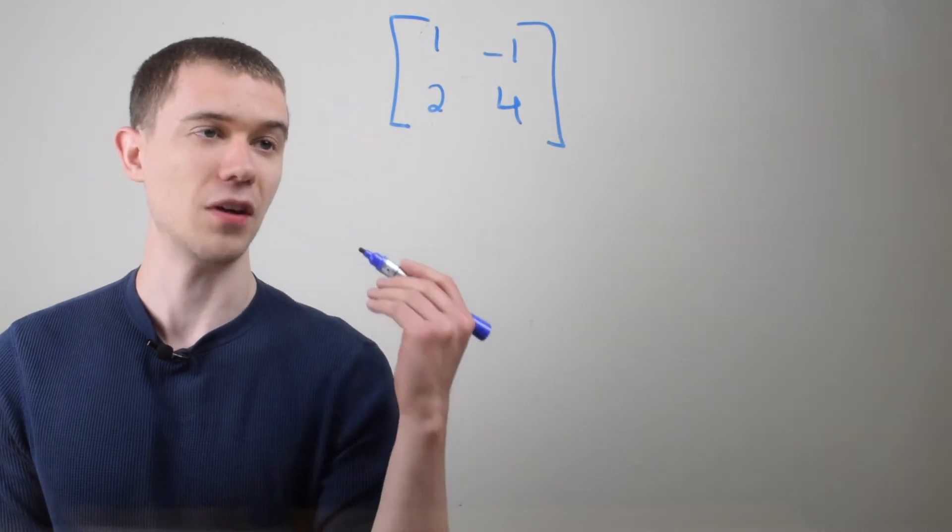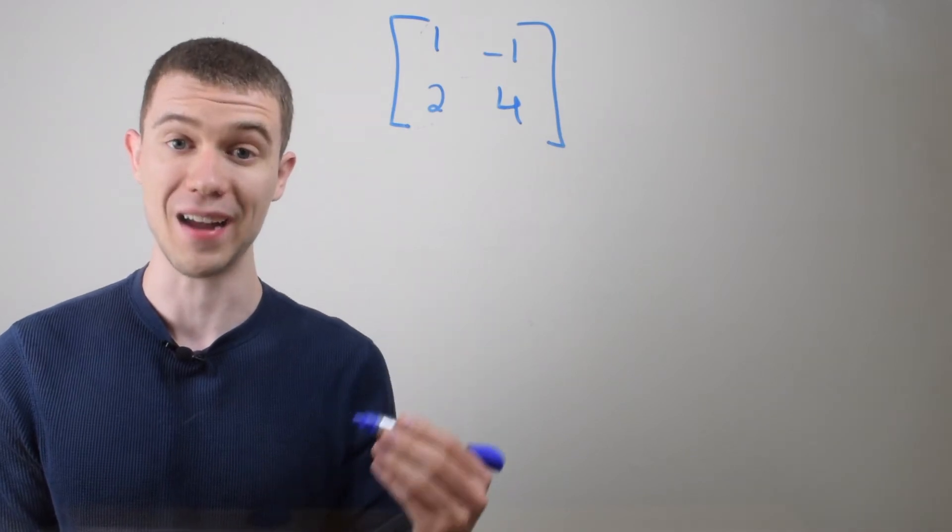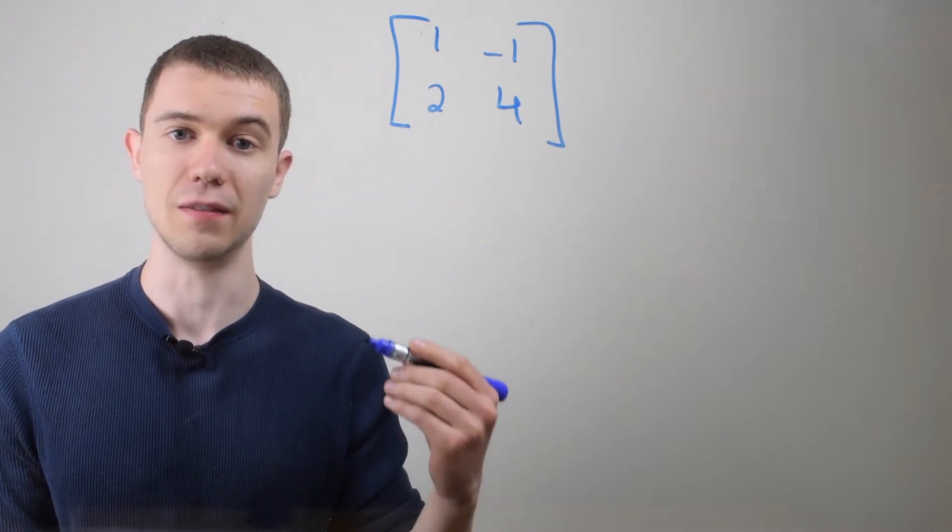So here I have a 2x2 matrix, two rows and two columns, and I want to find all of its eigenvalues and all of its eigenvectors.